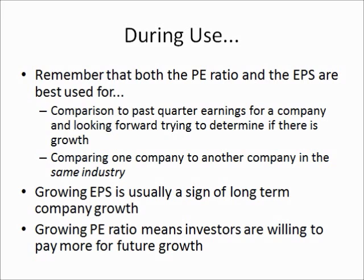A growing EPS is usually a sign of long-term company growth — it means the company is really earning money on their cash and investments. A growing P/E ratio means investors are willing to pay more for future growth, which typically means the price of the stock is going up. However, just because the P/E is low — lower than past quarters or lower than the industry — doesn't mean the business is bad. It may mean investors haven't figured out the potential of the company, meaning it's undervalued, which means you can purchase at a discount and potentially make more money.